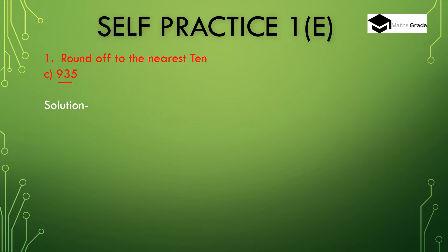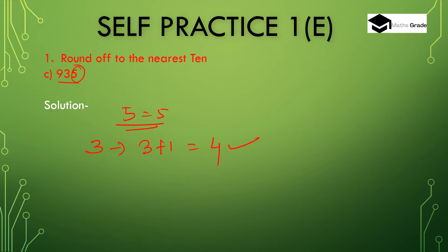Part C: round 935 to the nearest 10. The unit place digit is 5, which is equal to 5, so add 1 to the 10th place digit: 3 plus 1 is 4. Write 0 in the unit place. The hundreds digit stays as 9. So 935 rounded to the nearest 10 is 940.